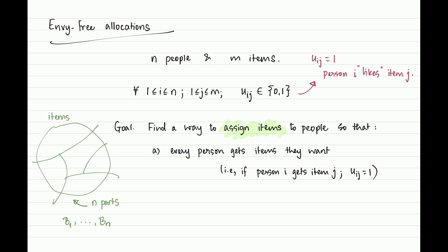Beyond a valid partition, we also want the allocation to have special properties. First, we want every person to get an item that they like — an item for which they have utility one. This is called non-wastefulness: you never give an item to a person who doesn't care for it. You could imagine setting up a graph with edges based on utilities and looking for a generalized matching that gives everybody a collection of items they like.